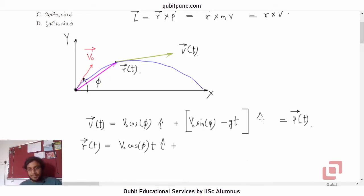I'm sorry. It should have been j cap. So now we have to write down the displacement for the particle along the y direction. We can use the formula S is equal to ut plus half a t squared. So it will be V naught sin phi t minus half g t squared j cap.